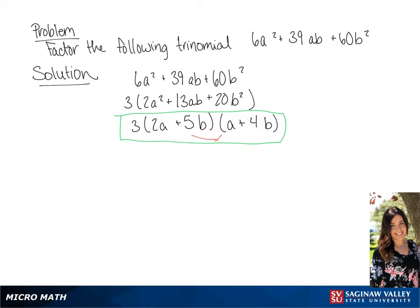If we multiply 5b times a, we get 5ab, and we're looking for a second ab. So we have 8ab, which equals 13ab, giving us our middle number.